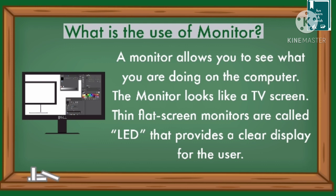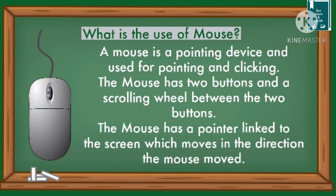What is the use of mouse? A mouse is a pointing device used for pointing and clicking. The mouse has two buttons and a scrolling wheel between the two buttons. The mouse has a pointer linked to the screen which moves in the direction the mouse moves.